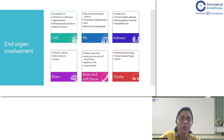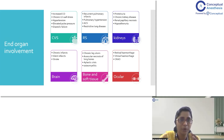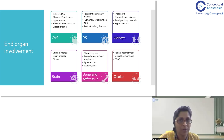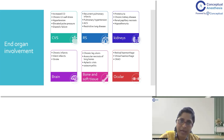In pre-operative assessment of a sickle cell anemia patient, the cardiovascular system requires careful evaluation. Since the patient has been anemic from childhood, the heart compensates by increasing cardiac output, causing LV overwork and LV wall stress, which can lead to hypertension and elevated pulse pressures. Diastolic pressure may be normal but systolic pressure is elevated to compensate for tissue-level anemia. Prolonged LV wall stress causes loss of relaxation property, leading to diastolic failure. Always obtain an ECG and echocardiogram in the pre-op assessment.